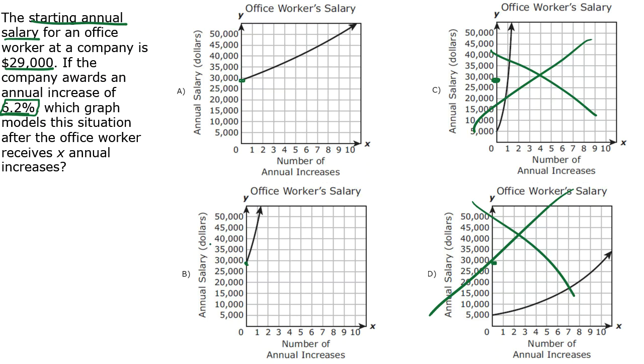Let's take a look at what goes on with answer choice A. From year zero to one, it goes up by a little bit. From year one to two, it goes up by a little bit. Two to three, it goes up by a little bit. Kind of hard to tell, but possibly.